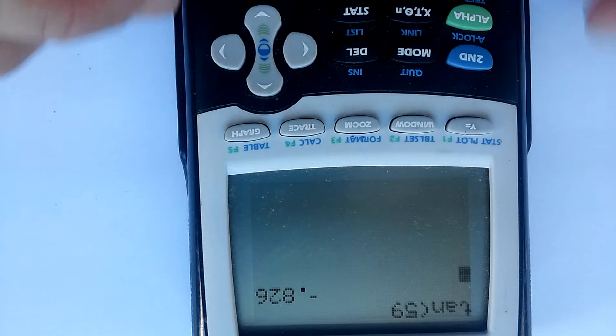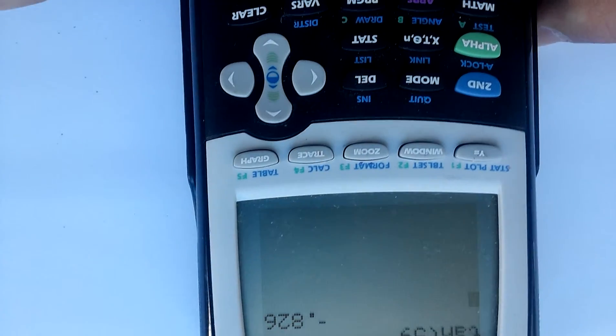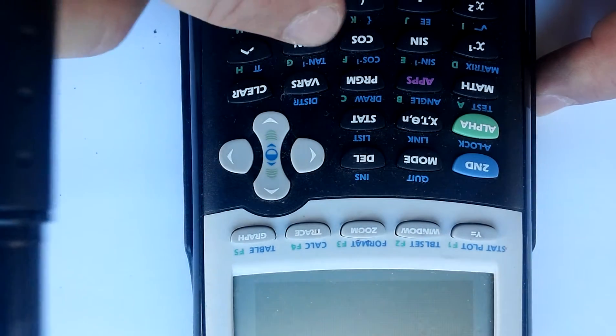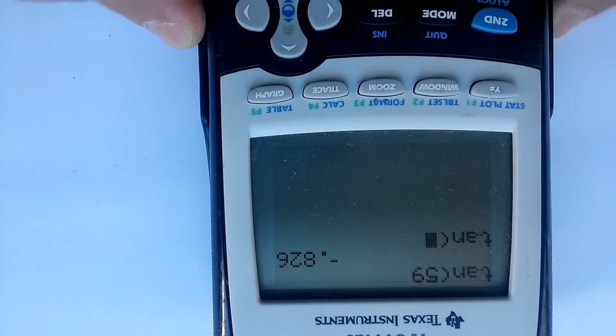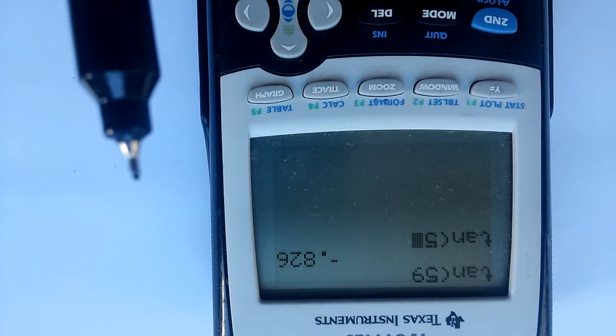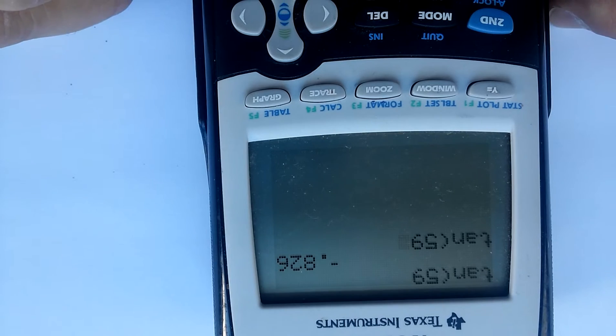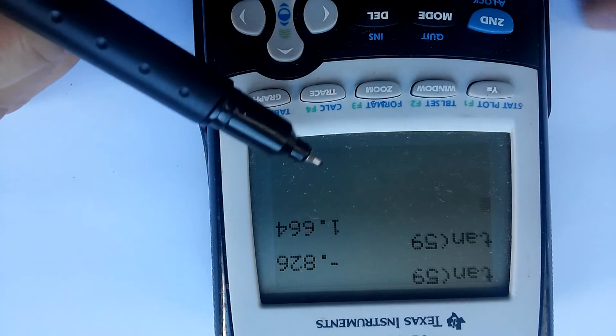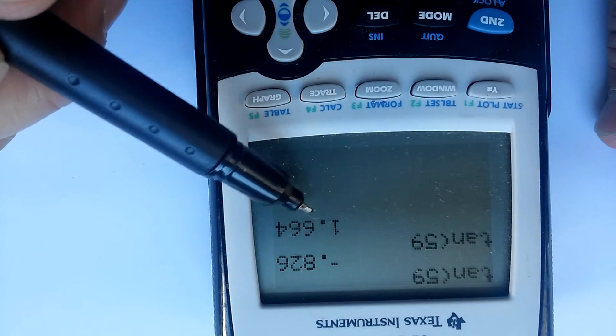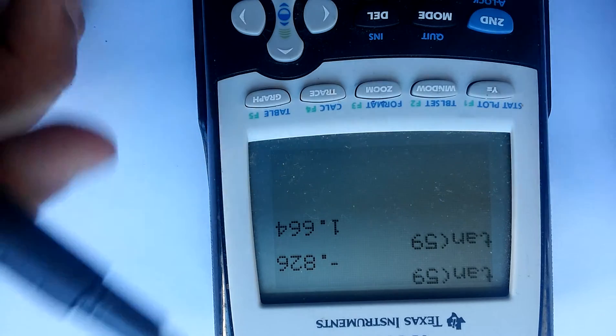So let's do that and start all over again. Hit the tangent button, enter 59 degrees, and press enter. Now you'll see that it's 1.664.